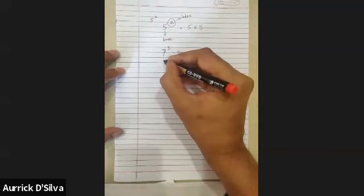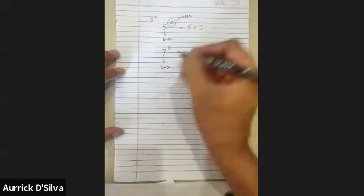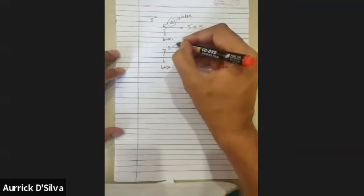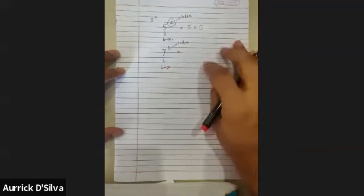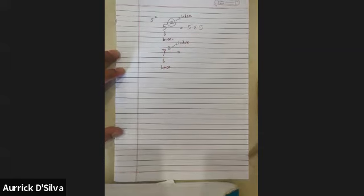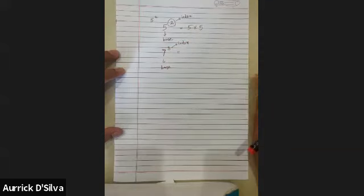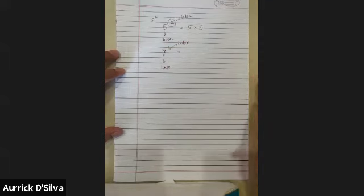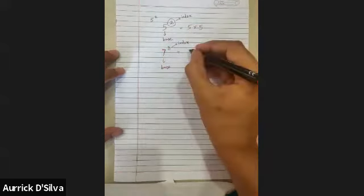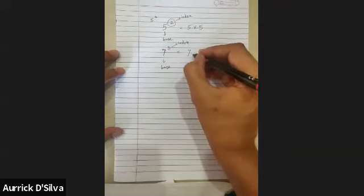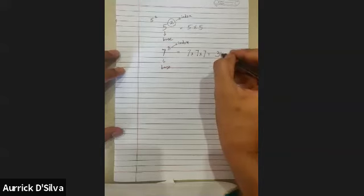Here, seven is the base and three is the index. Base tells me which number I'm multiplying; index tells me how many times I'm multiplying it. So seven I'm multiplying three times, writing it as seven into seven into seven, and the answer for this is 343.